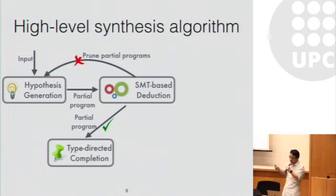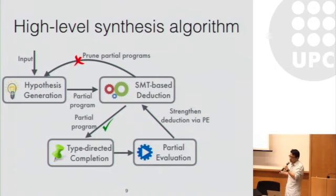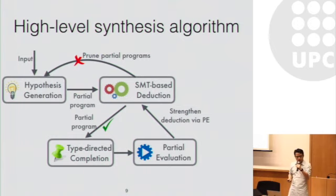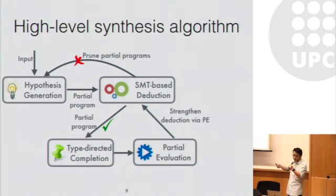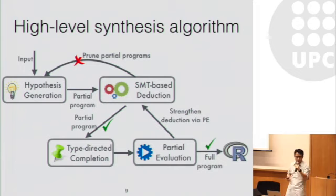As soon as we fill in one missing argument, we will try to partially evaluate the current partial program to generate a stronger specification for it. And again, we consult the SMT detection engine to check whether it is feasible or not.